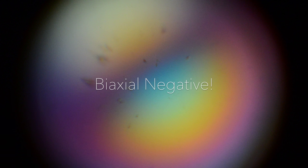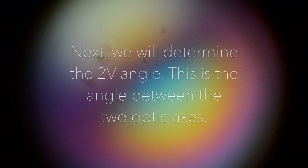This example is a biaxial negative mineral. Next we will determine the 2V angle. This is the angle between the two optic axes. We can determine the angle by examining the curvature of the isogyres.